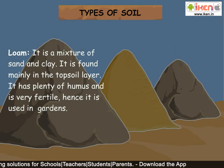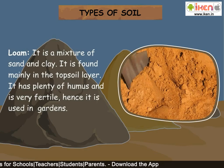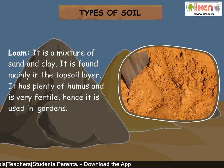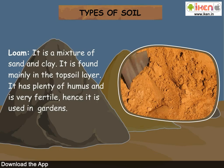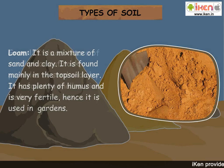Loam is a mixture of sand and clay. It is found mainly in the topsoil layer. It has plenty of humus and is very fertile. Hence, it is used in gardens.